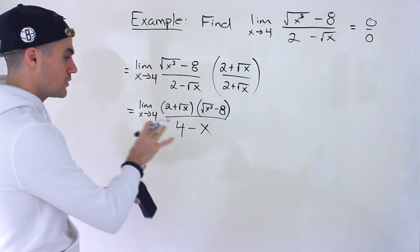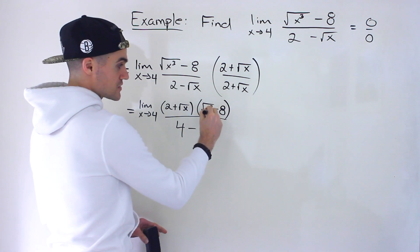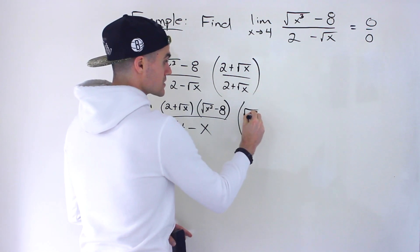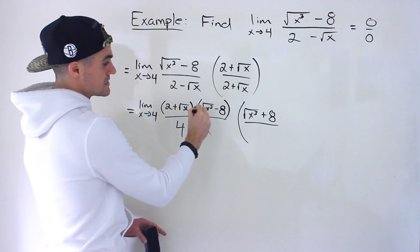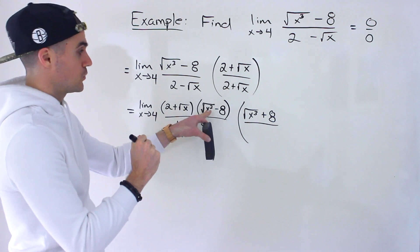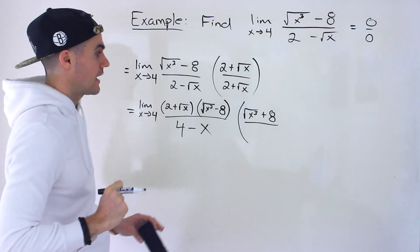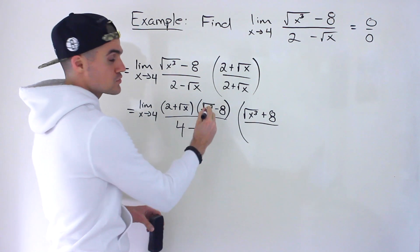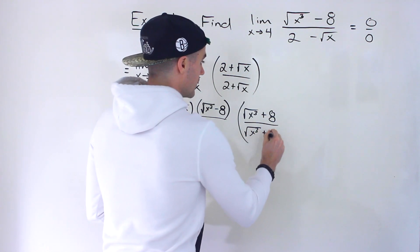At this point we still can't cancel anything, so we need to rationalize the numerator as well. We have the square root of x to the power of 3 minus 8, so we multiply by the square root of x to the power of 3 plus 8 — just changing the sign in the middle. Be careful: x to the power of 3 is still under a square root; it's not the cube root of something. This is simply rationalizing a square root.